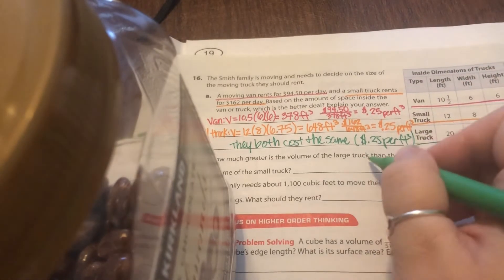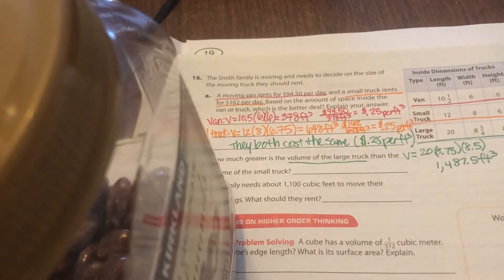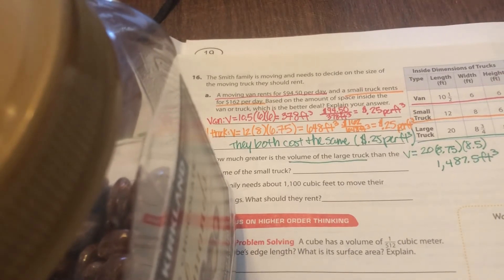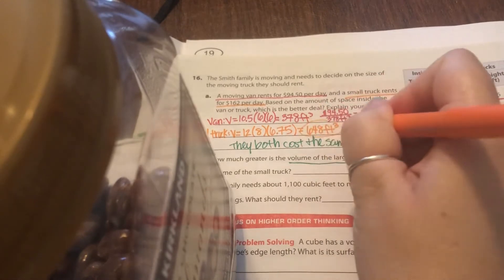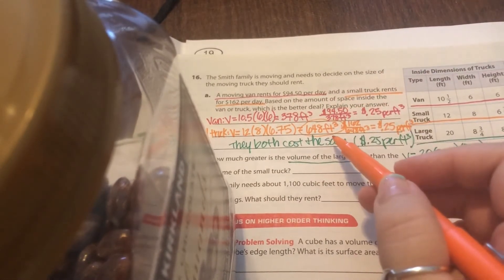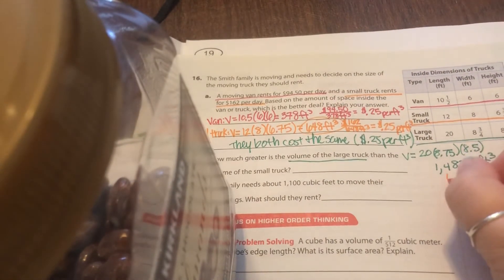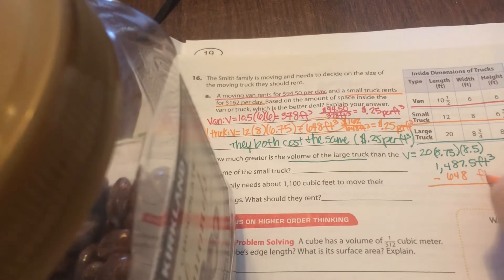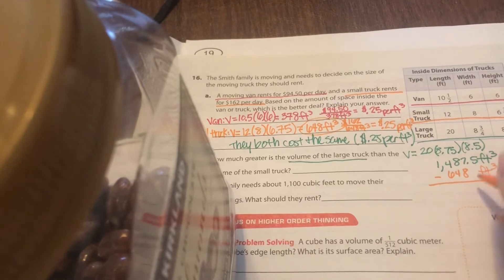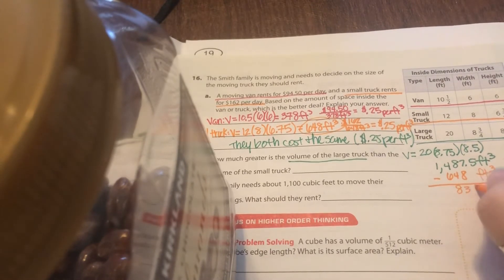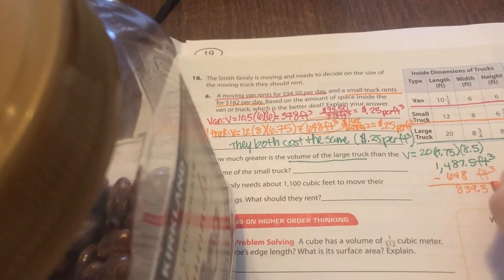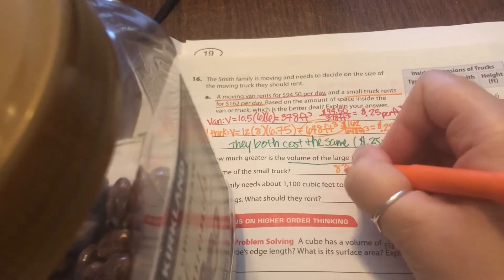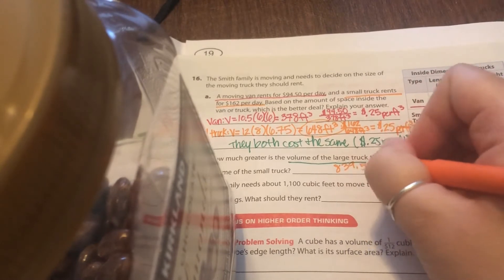So if I go ahead and type that into my calculator, you have 20 times 8.75 times 8.5. You get a volume of 1,487.5 cubic feet. Now I wanted to compare the large truck. That's what I just found to the small truck. So the volume of the small truck, I already found that was up here. That was that 648 cubic feet. So 648. Go ahead and subtract those two amounts and you get 839.5 cubic feet. So the difference in the two volumes is 839.5 cubic feet.